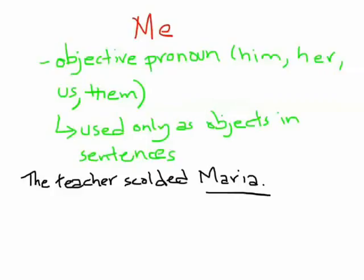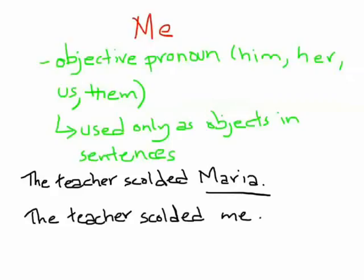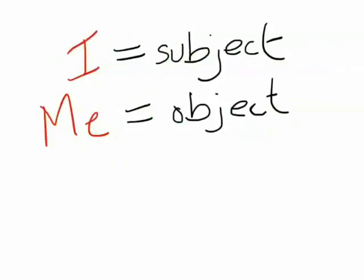If Maria were to say this, she would say, 'The teacher scolded me.' As we can see, 'me' has replaced the object. There you have it — 'I' is the subject and 'me' is the object of any sentence they are used in. If you keep this simple formula in mind, you will never have problems with any sentence.